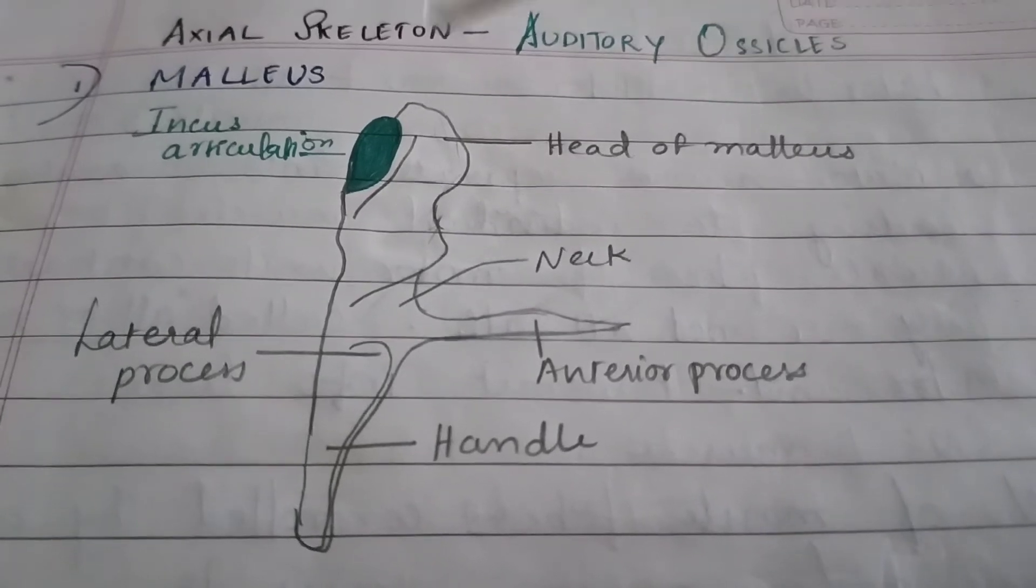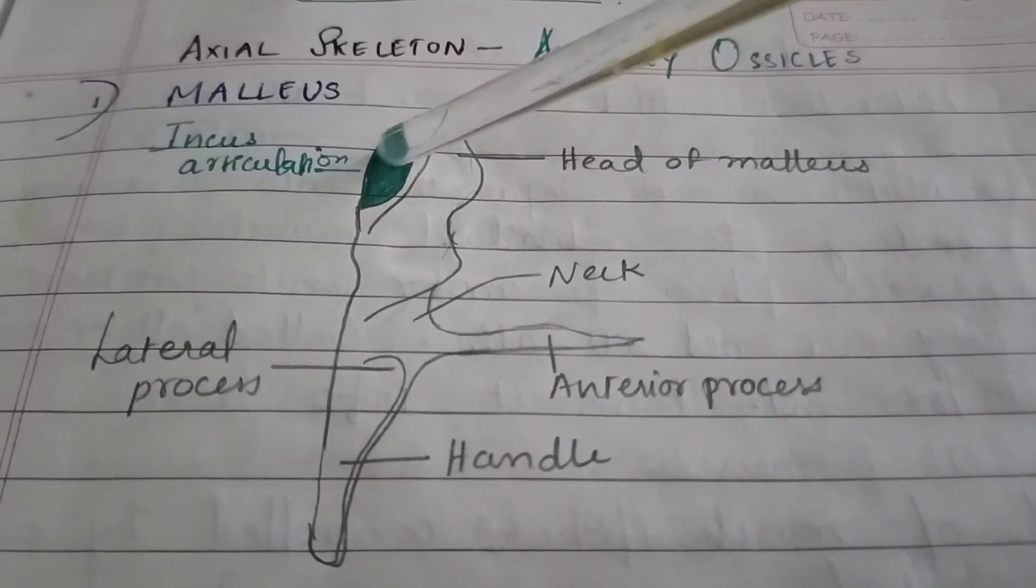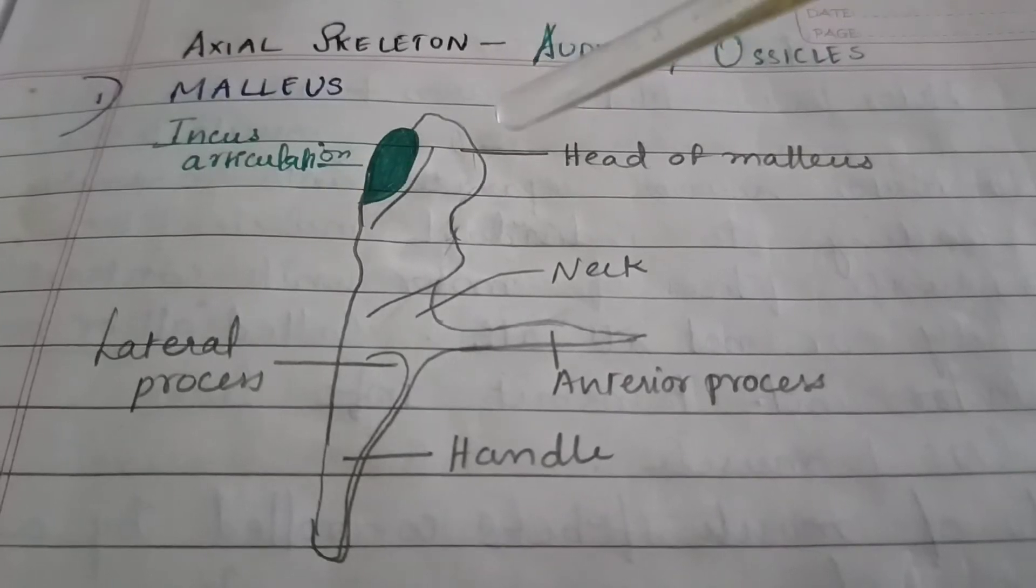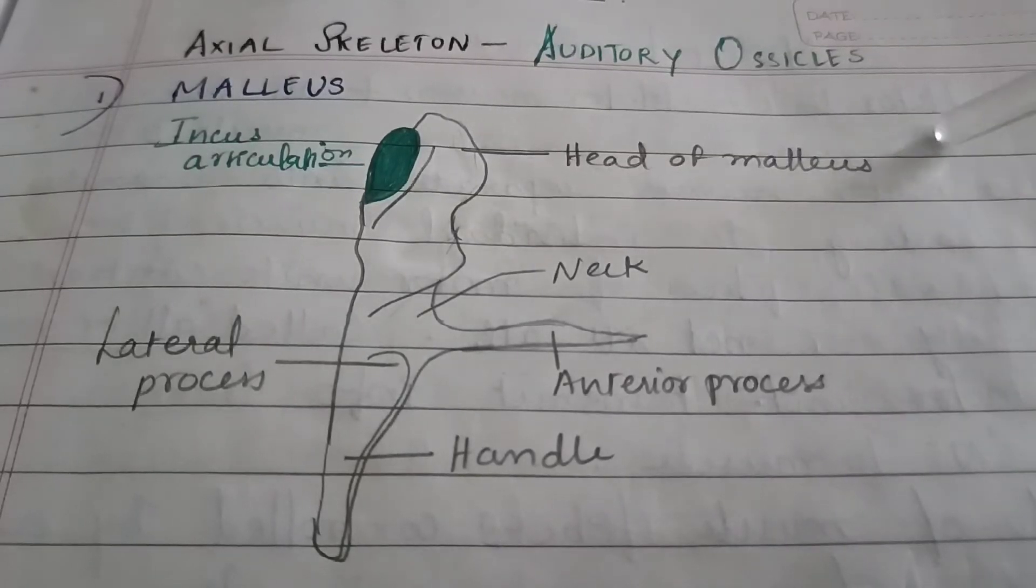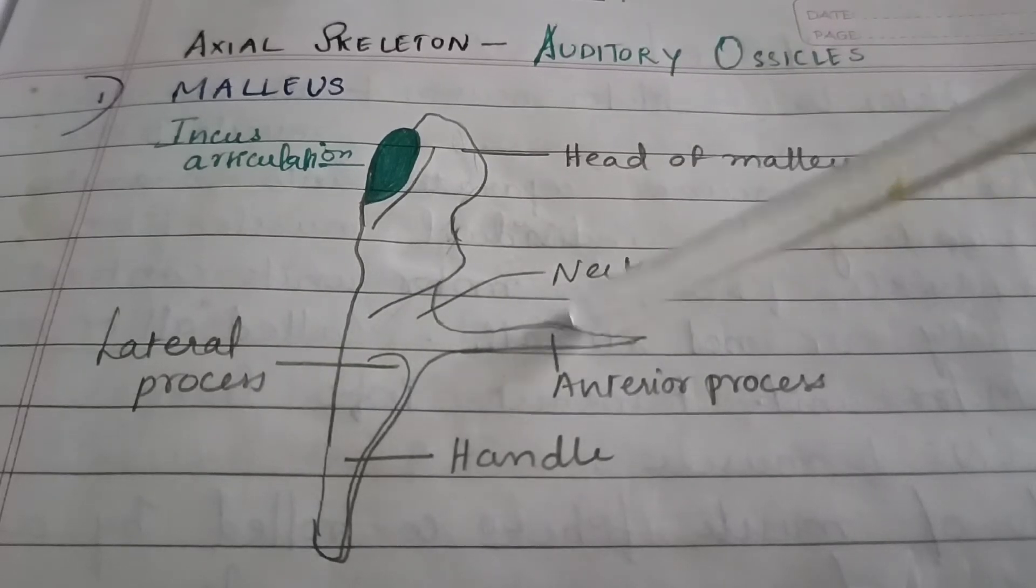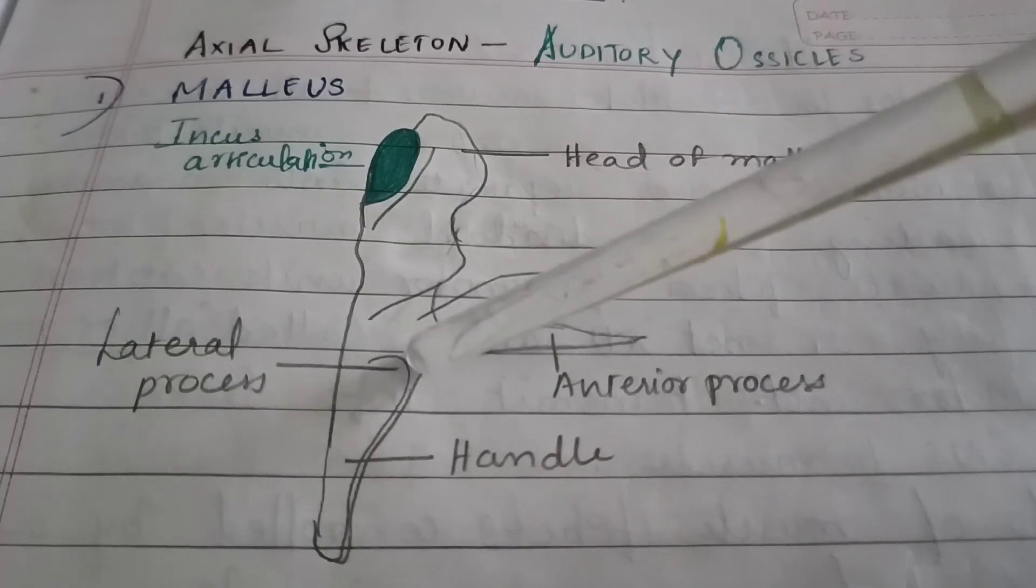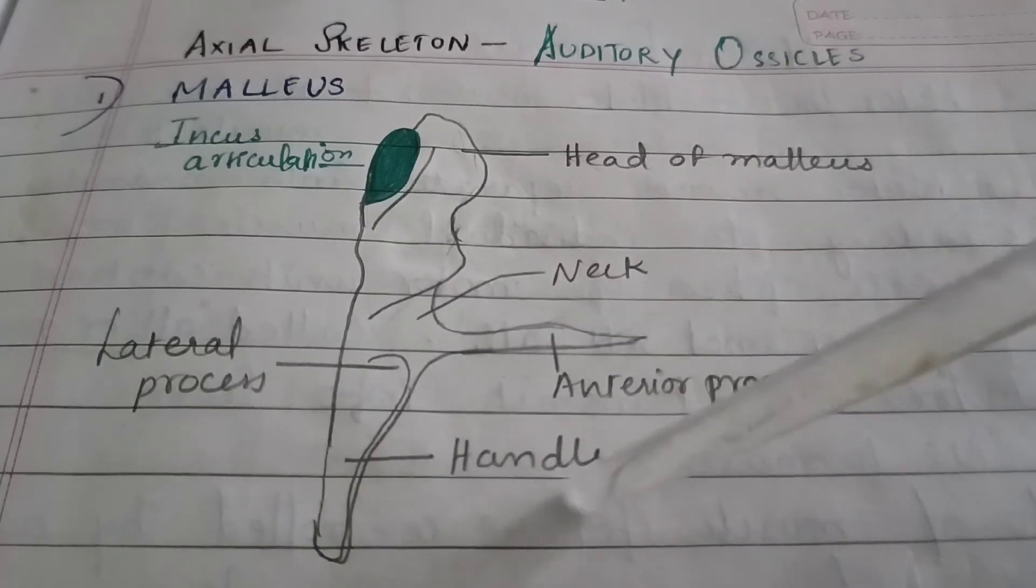First one is malleus. Here you can see incus articulation point, the head of the malleus next to that. By the way, malleus is shaped like a hammer and there is the neck portion, anterior process, lateral process, and the handle.